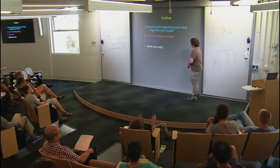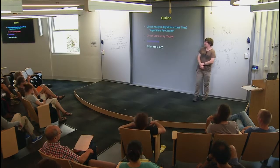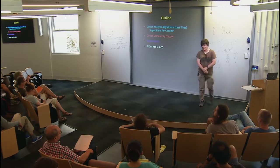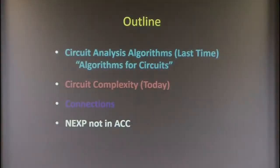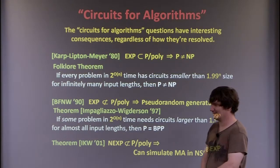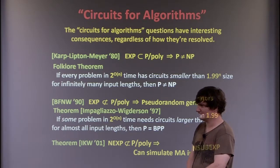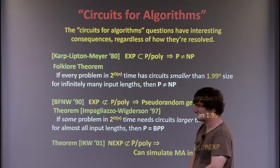That's the 30-minute brief summary of circuit complexity. So the infinitely many and almost all quantifiers are important — otherwise you'd get strange results. The subtle interplay between 'for all input lengths' and 'for infinitely many input lengths' matters for which implications go through.